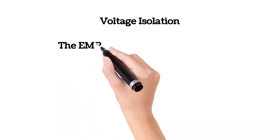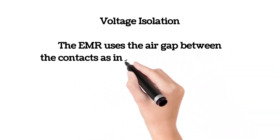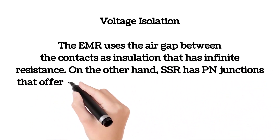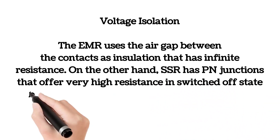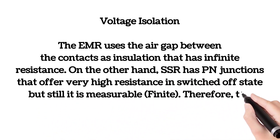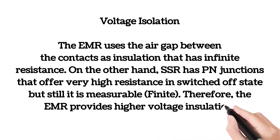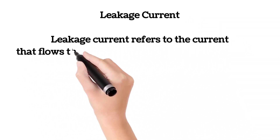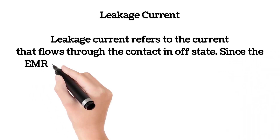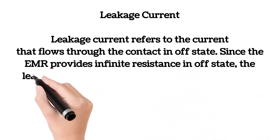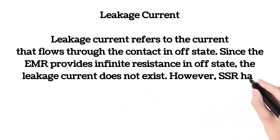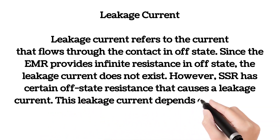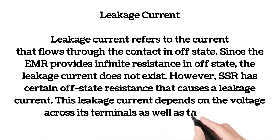Voltage isolation: The EMR uses the air gap between the contacts as insulation, which has infinite resistance. SSR has PN junctions that offer very high resistance in the switched-off state, but it is still measurable and finite. Therefore, the EMR provides higher voltage insulation. Leakage current refers to the current that flows through the contact in the off state. Since the EMR provides infinite resistance in the off state, leakage current does not exist. However, SSR has a certain off-state resistance that causes a leakage current, which depends on the voltage across its terminals as well as the design.